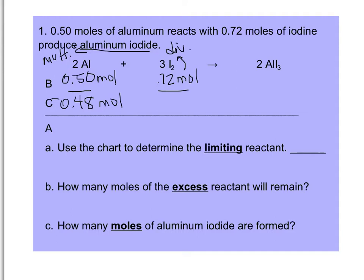If we're using up all of the iodine, it goes to 0. Subtracting the aluminum used (0.48) from what we started with (0.5) leaves 0.02 moles of aluminum. So we have 0 left of iodine and a positive 0.02 moles of aluminum remaining. That means the limiting reactant is iodine — the one that runs out and has nothing left at the end.